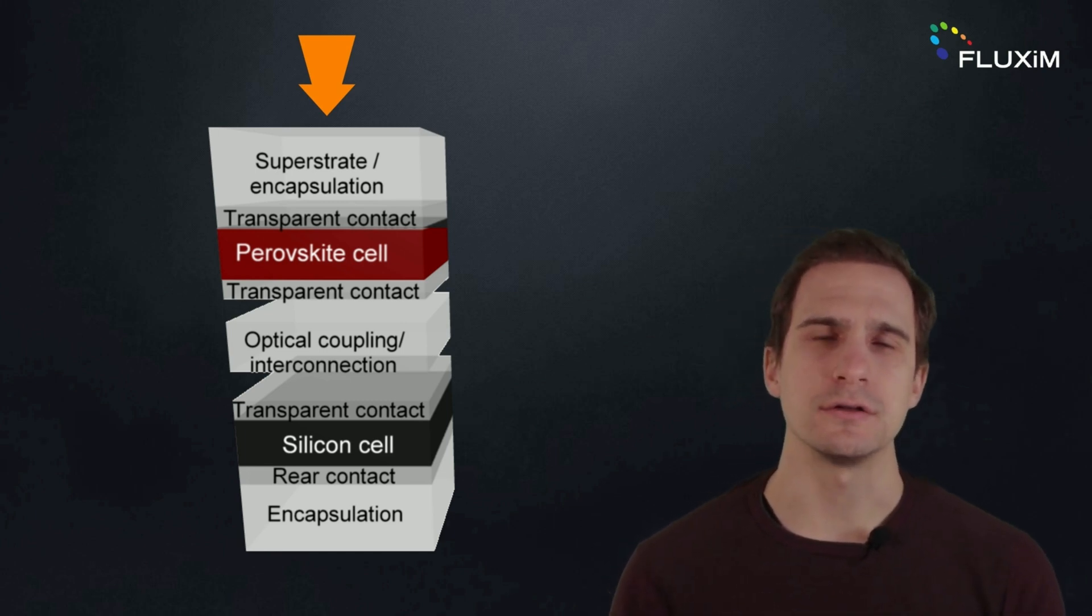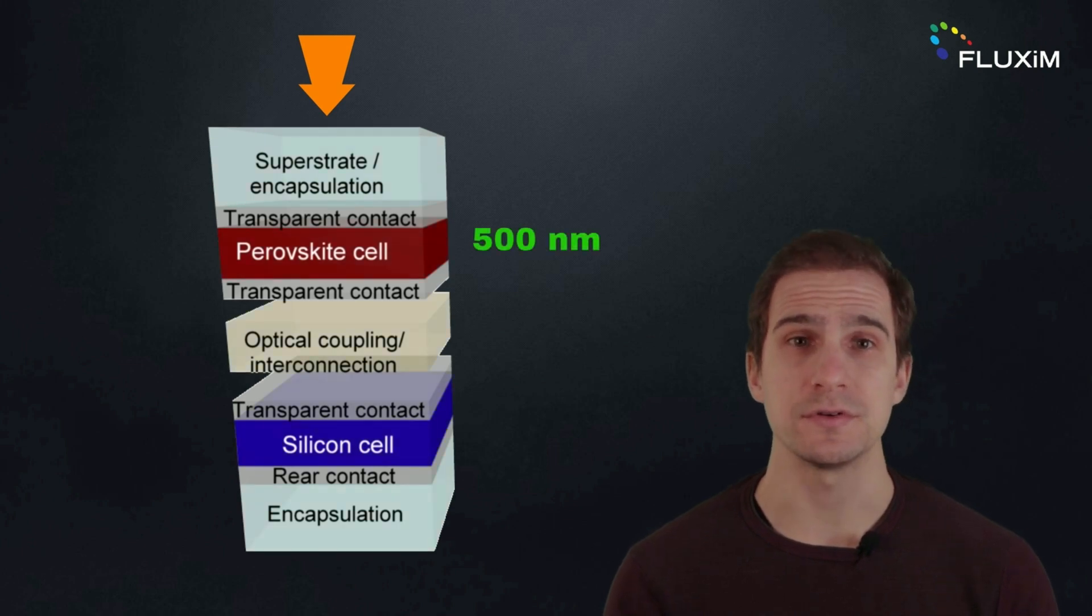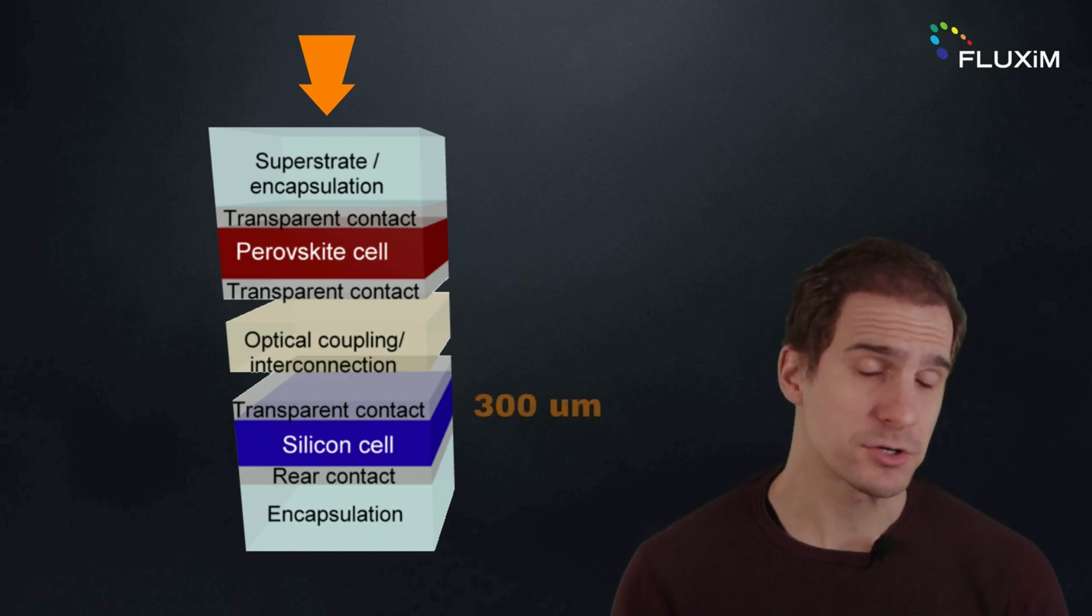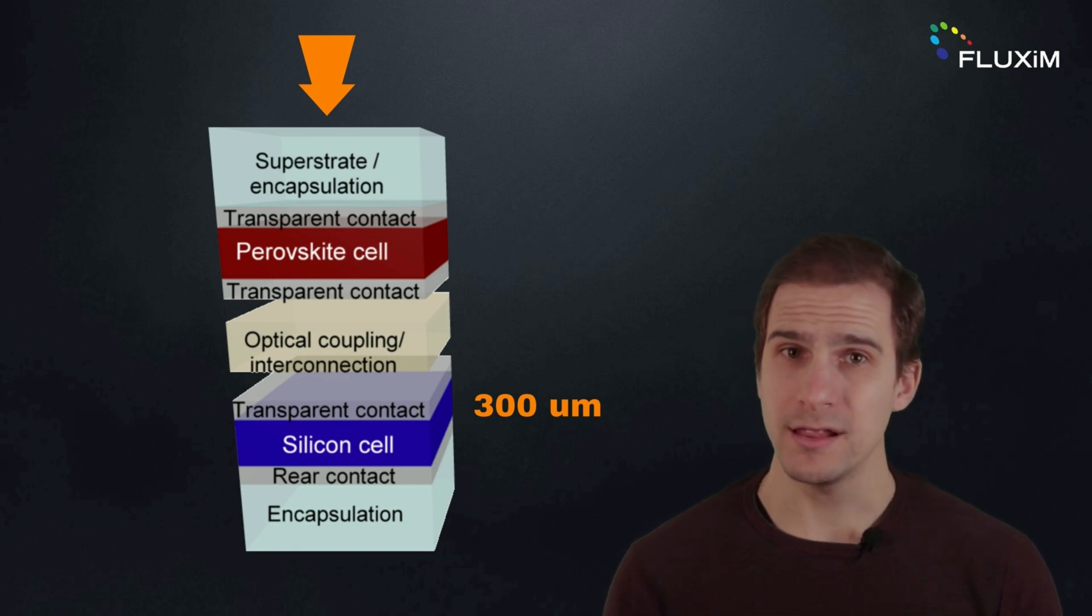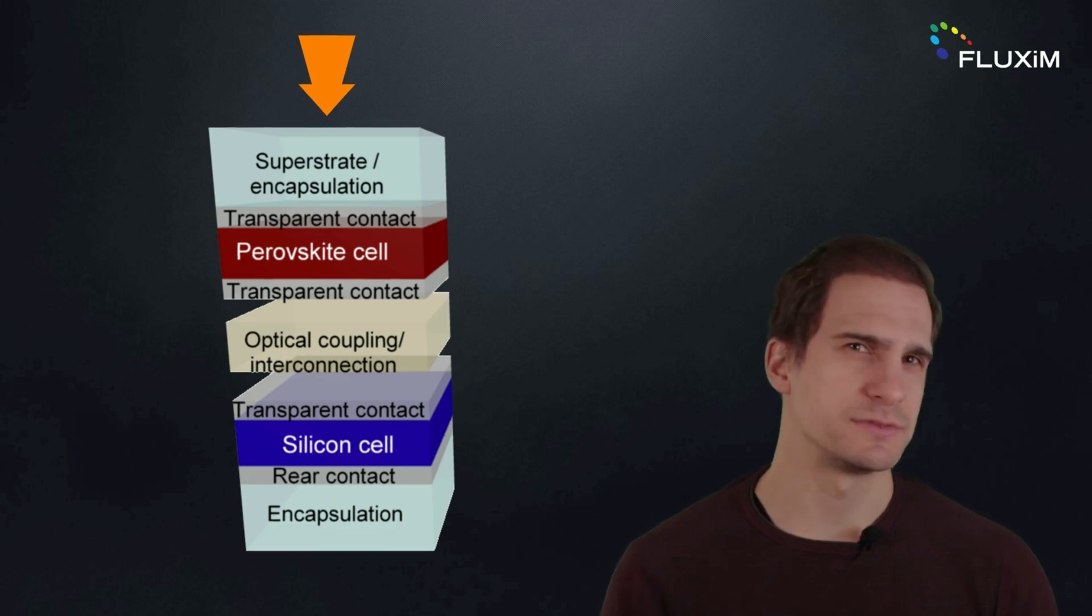Therefore, thicknesses of around 500 nm are sufficient for solar cell devices. In comparison, the silicon absorbing layer in a solar cell has a thickness of up to 300 micrometers because of the indirect band gap and low absorption coefficient. That's almost a thousand times thicker.